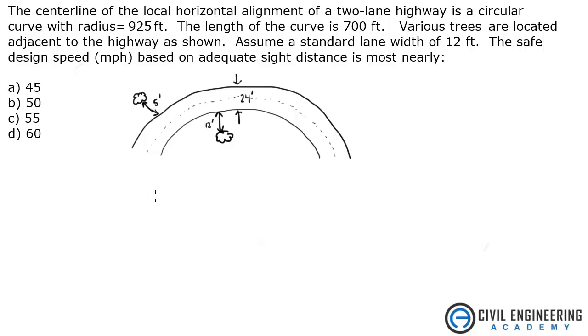The problem states that the centerline of the local horizontal alignment of a two-lane highway is a circular curve with a radius of 925 feet. The length of the curve is 700 feet. Various trees are located adjacent to the highway as shown. Assume a standard lane width of 12 feet. The safe design speed in miles per hour based on adequate sight distance is most nearly what?